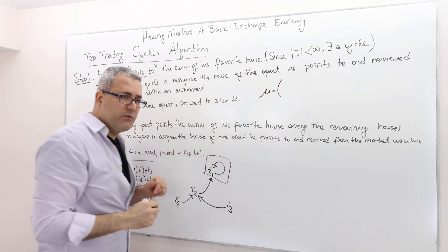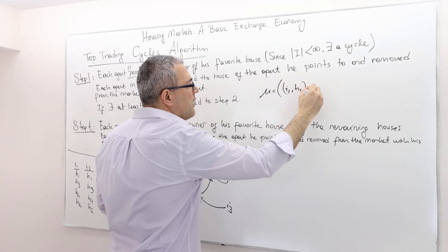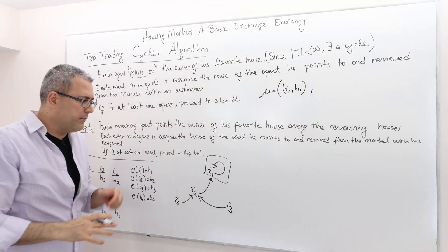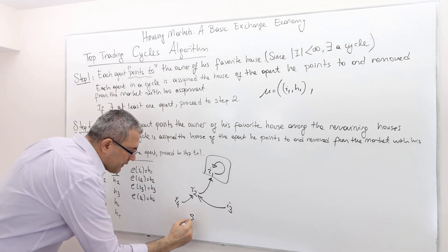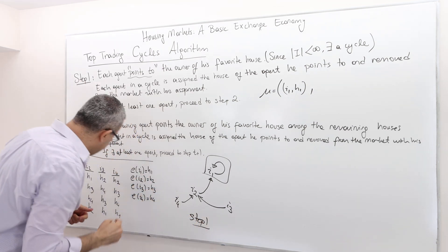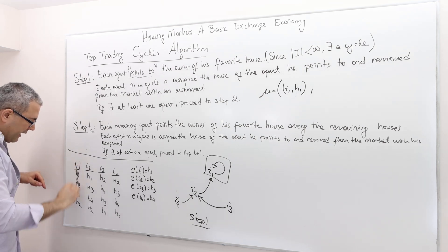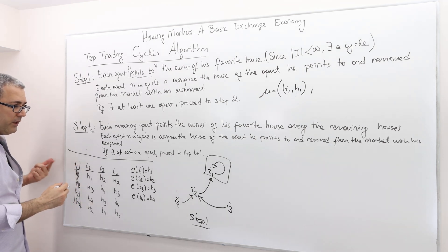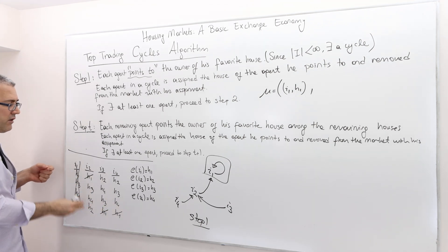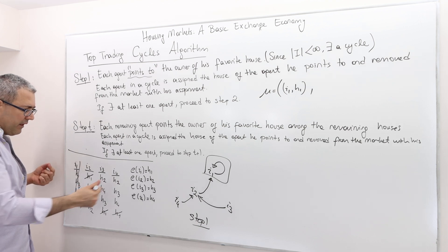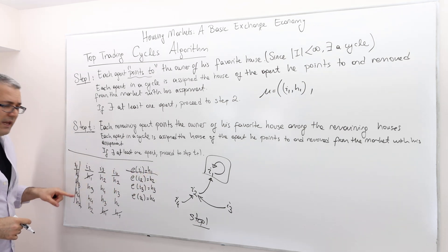In step one, I'm going to match agent one to his own house. Then he's going to be out of the market. As a result of step one, we eliminate agent one and we eliminate house one because it's no longer an available house.